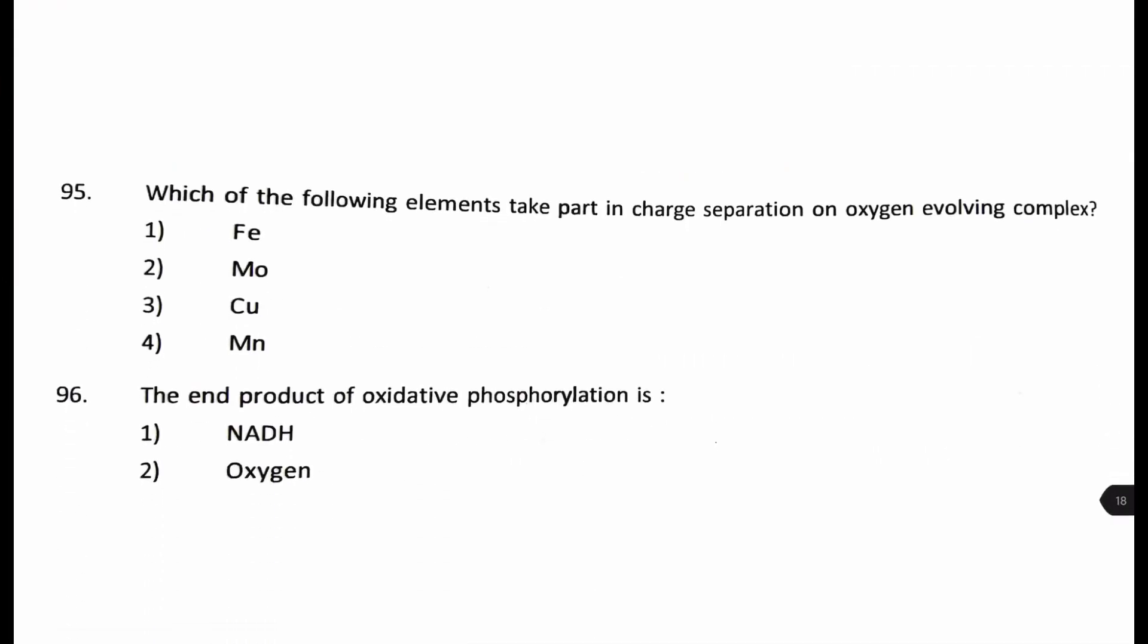Which of the following elements take part in the charge separation on oxygen evolving complex? So, oxygen evolving complex is found in the starting of photosynthesis cycle below the PS2. It is just a complex which splits water molecules into 4H plus 4 electrons and an O2, right? And so, this complex is actually a cluster of manganese, calcium, and chloride ions.